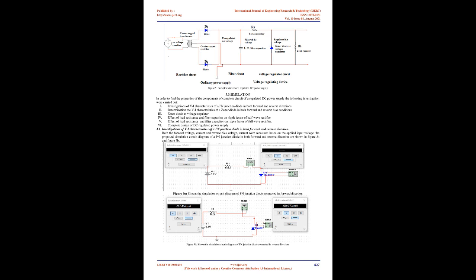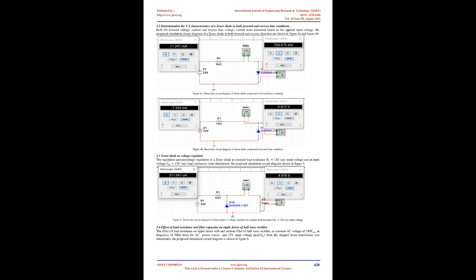Figure 5 shows the circuit diagram of Zener diode as voltage regulator at constant load resistance RL equals 15K varying input voltage. The effect of load resistance on ripple factor with and without filter of half-wave rectifier at constant AC voltage of 240V at frequency of 50 Hz from the AC power source, and 12V peak input voltage from the step-down transformer, was determined. The proposed simulation circuit diagram is shown in Figure 6. Figure 6 shows the simulation circuit diagram of half-wave rectifier without capacitor connected.